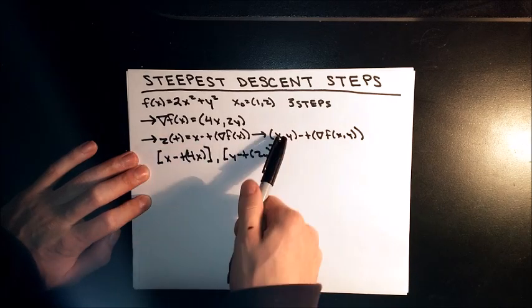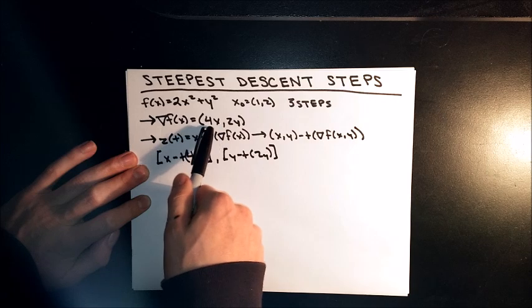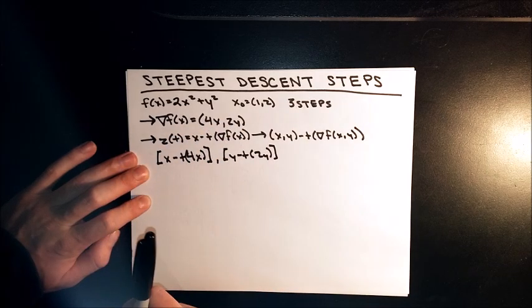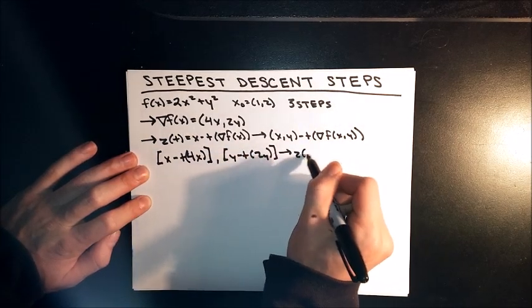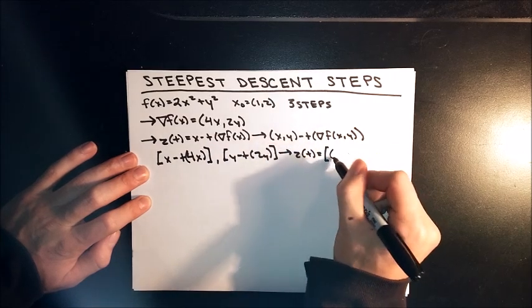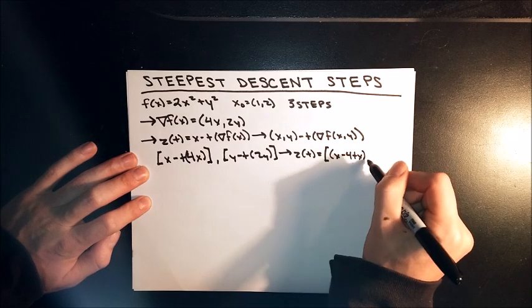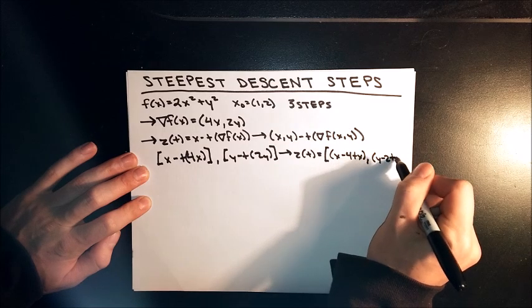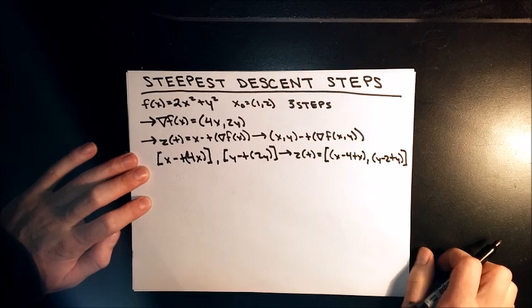So I went ahead and plugged in our x and y minus t gradient with respect to x and y. Just like that. I'll simplify it a little bit. You can factor out the x and y also. That's up to you.